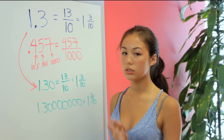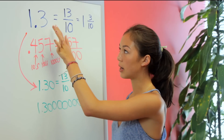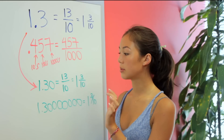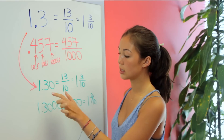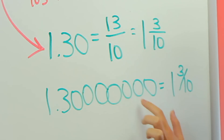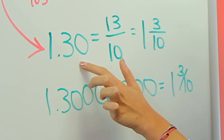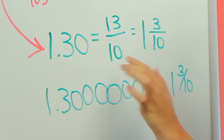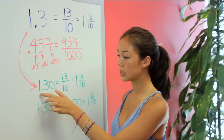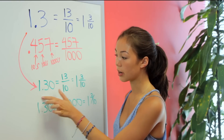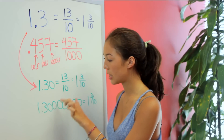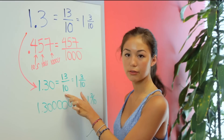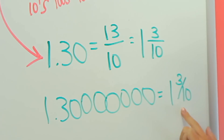Just to show you that it really doesn't matter how many zeros we have here, I've thrown up this again but with a ton of zeros. And it's always the same — the zeros don't matter. Because this would just be the same as 130 over 100, zeros cancel out, and then we're still left with 13 over 10. Same answer every time.